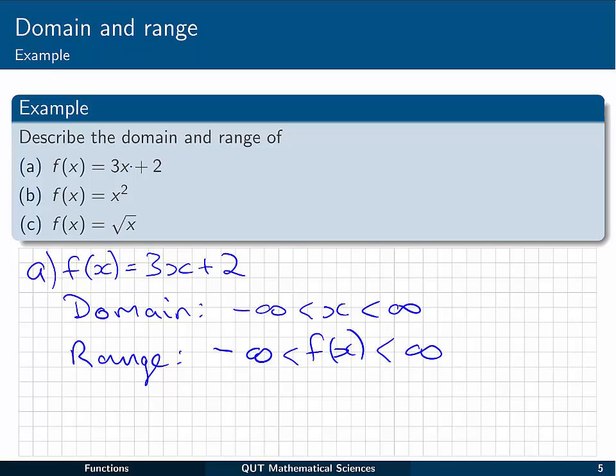Similarly, we can generate any output value we like from minus infinity to positive infinity by just varying the x value. There's no restriction at all, and we could possibly generate all of those numbers. So the range is minus infinity less than f of x less than infinity.